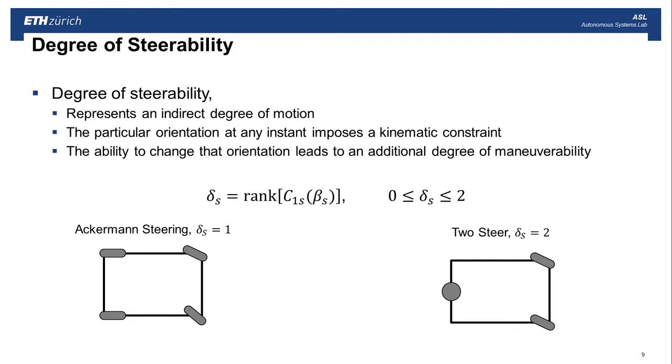Now the degree of steerability represents an indirect degree of motion for the platform. And this means that the particular orientation at any instant imposes a kinematic constraint, but we can change this by turning the wheels. So we define this degree of steerability, that's this delta S, as the rank of C1. And this is always going to be between 0 and 2. So note that this is not a measure of how many steerable wheels you have. So for the Ackermann-steered vehicle, this is always constrained with these guys all meet. And so the steering of these two wheels is actually coupled. So this one has a degree of steerability 1. Whereas the two-steer, these wheels can rotate independently, and this has a degree of steerability 2.